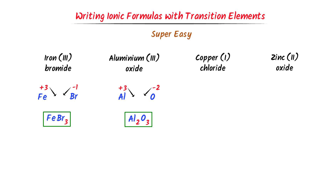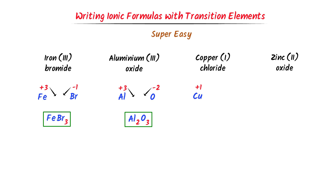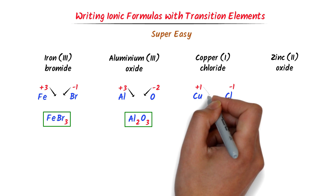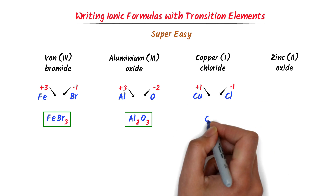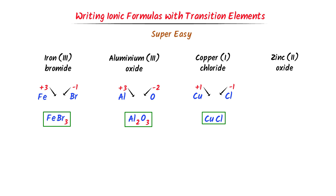In case of copper(1) chloride, the oxidation state of copper is positive 1 and that of chlorine is negative 1. I cross their charges and I get CuCl. This is the chemical formula of copper(I) chloride.